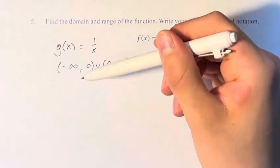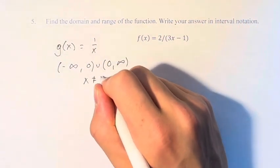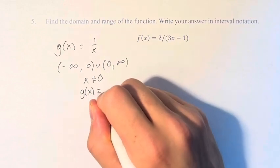This is the domain and it's the range. Basically x is not equal to 0 and g(x) is not equal to 0.